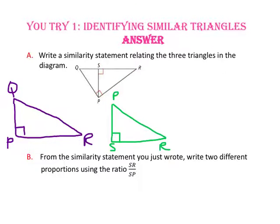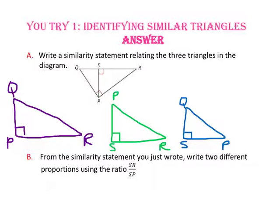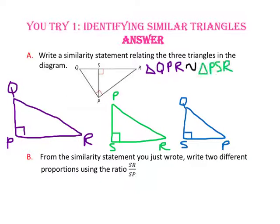And the small triangle, triangle Q, S, P. Now let's use our newly positioned triangles to write our similarity statement: triangle Q, P, R is similar to triangle P, S, R is similar to triangle Q, S, P.